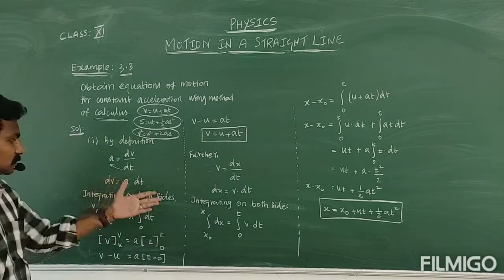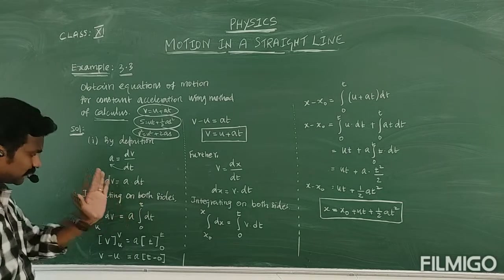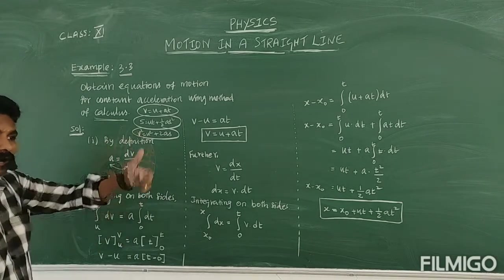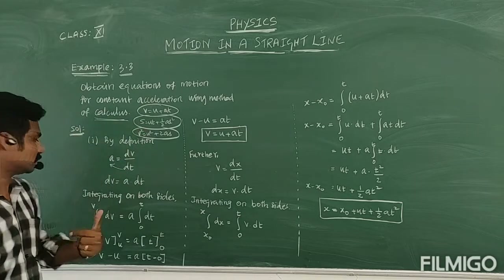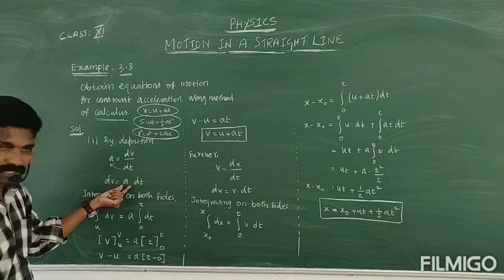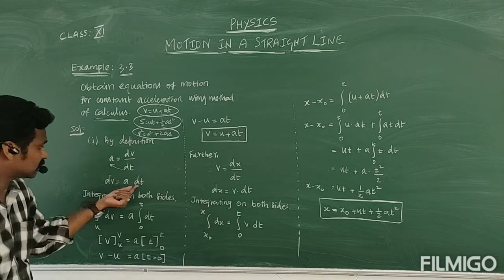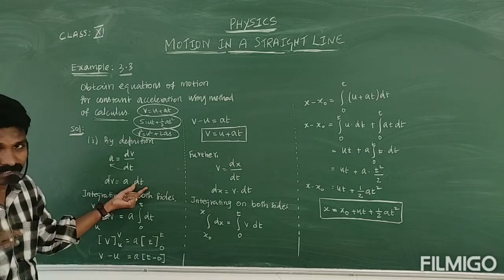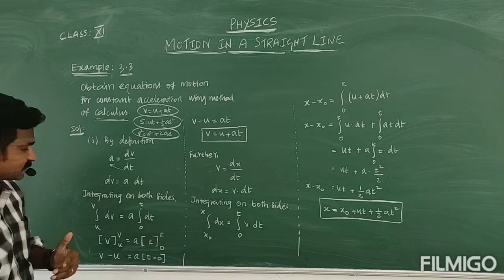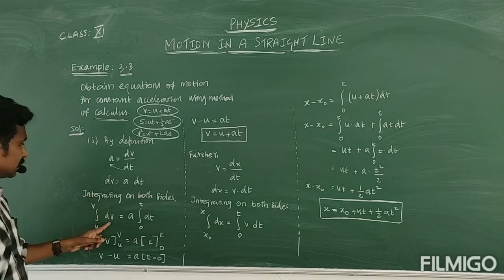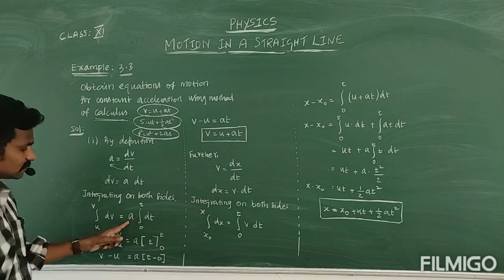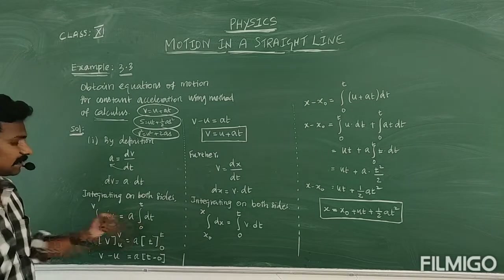Integrating on both sides, we should apply the limits according to the specification. Here the variable on the left side is velocity, and acceleration is constant so it can be taken outside. The integral of dV remains on the left side.